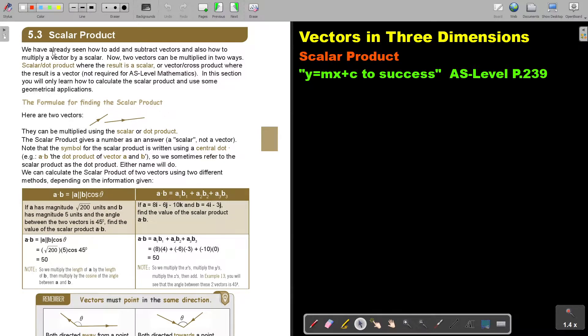Scalar product. We have already seen how to add and subtract vectors and also how to multiply a vector by a scalar. Now, two vectors can be multiplied in two ways. Scalar or dot product, where the result is a scalar. Or vector or cross product, where the result is a vector. Not required for AS level mathematics, so we're not going to do that one. In this section, you will only learn how to calculate the scalar product and use some geometrical applications.